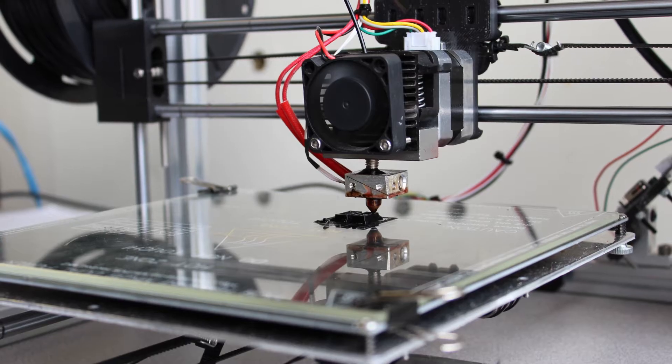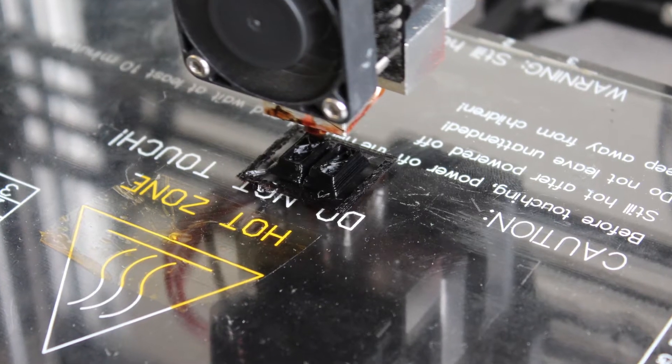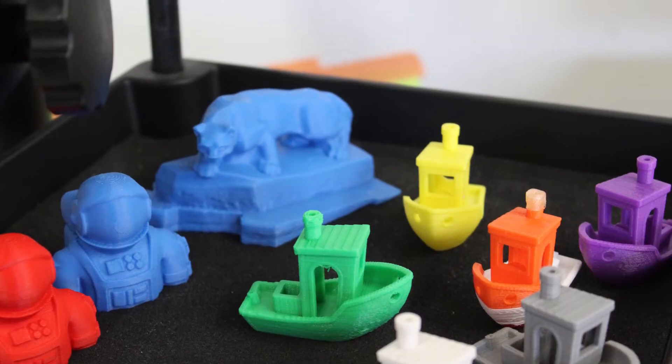Additive manufacturing is a manufacturing approach where we build up objects layer by layer, as opposed to the more traditional subtractive manufacturing approach where you take a chunk of material and then remove material from where you don't want it.